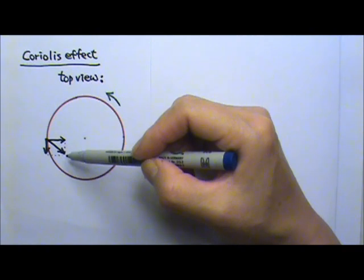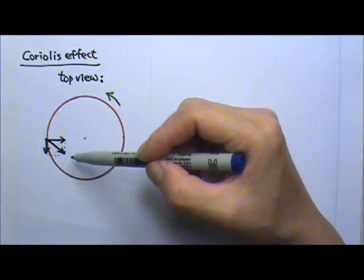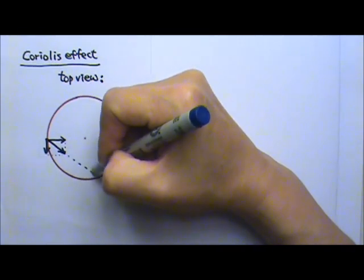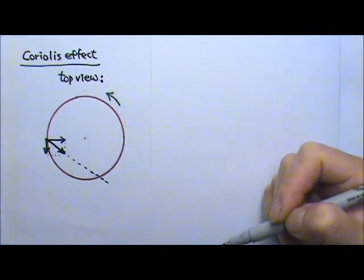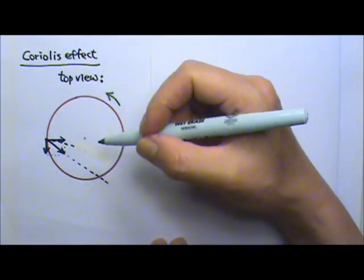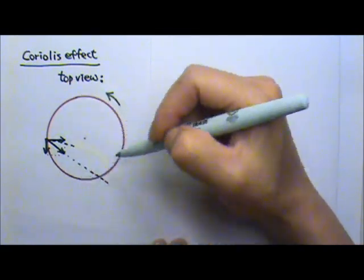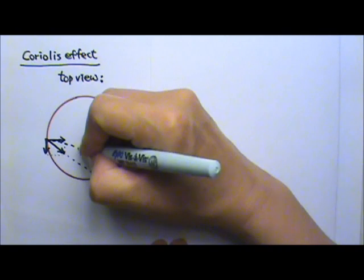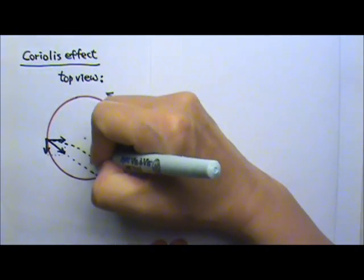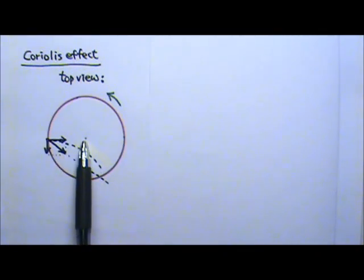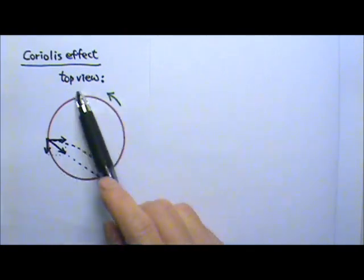Once the ball leaves my hand, there will be no horizontal force on the ball. So it travels at a constant velocity and follows this path along the straight line in the horizontal direction. However, for me, an observer rotating counterclockwise with the merry-go-round, I would see the ball somehow curves like this.